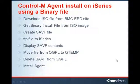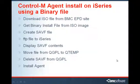The first thing we're talking about is downloading an ISO file from the BMCEPD site. Next, you need to get the binary install file from the ISO image. Then you're going to create a save file and FTP to that save file in the I-Series. Then we're going to display the save file contents to verify it has content, and we're going to move the file from QGPL to QTEMP. From there, we can delete the save file from QGPL and then install the agent.